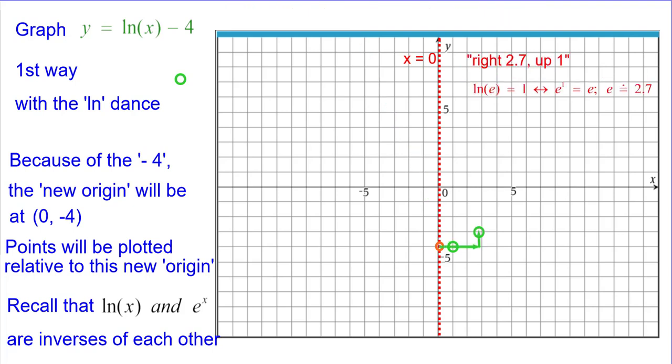From that new origin, right 2.7 up 1. The natural log of e is 1 and e to the first is 2.7 approximately.